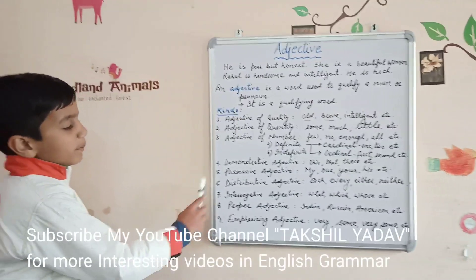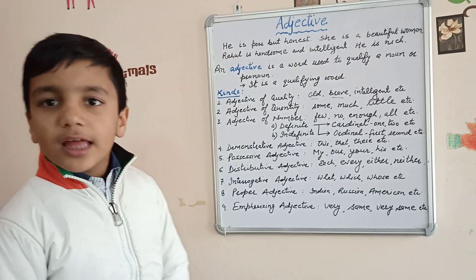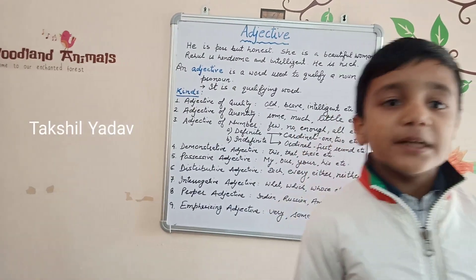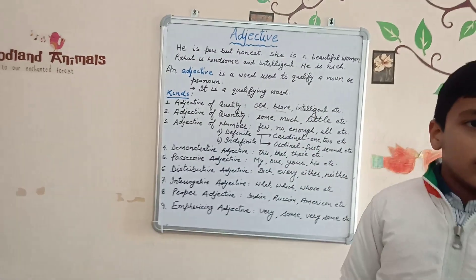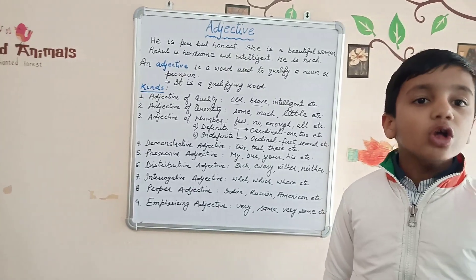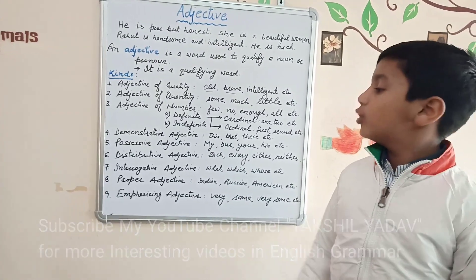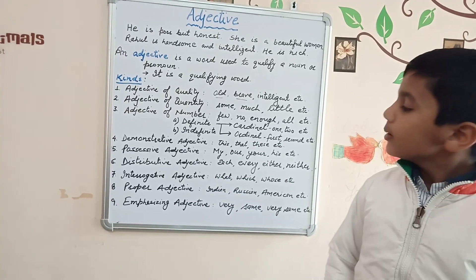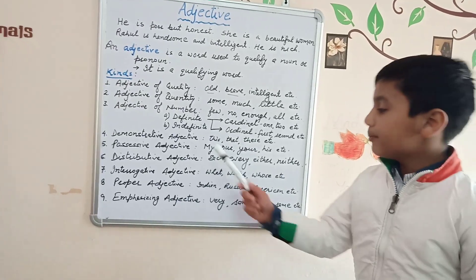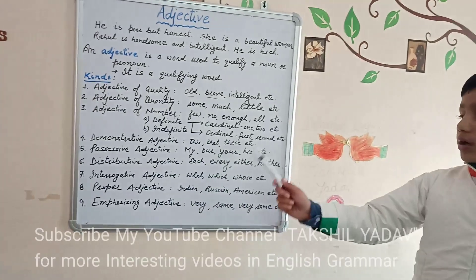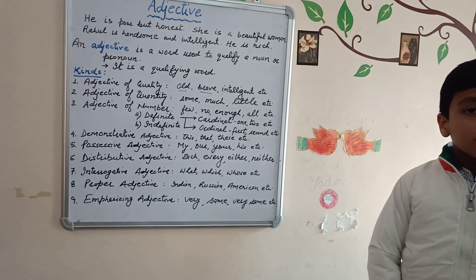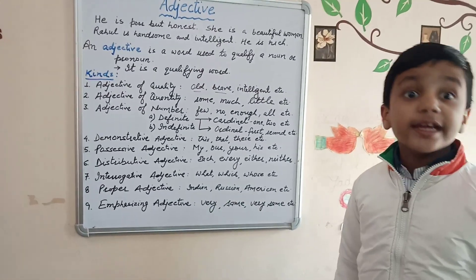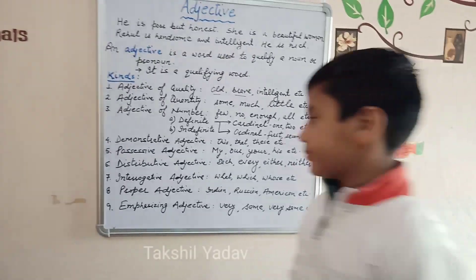Now, possessive adjectives. The adjectives that are used to show possession are known as possessive adjectives. For example: my, our, your, his, her, their, its, etc.